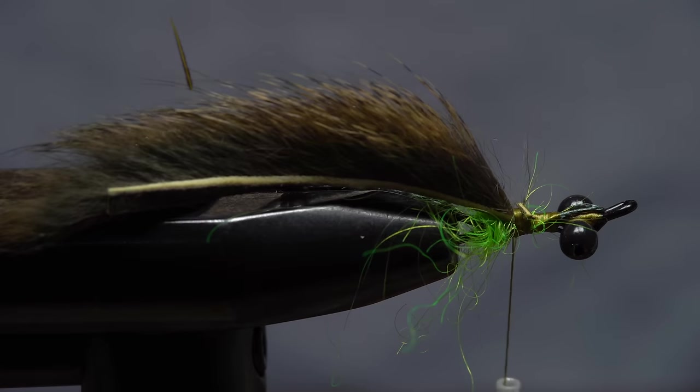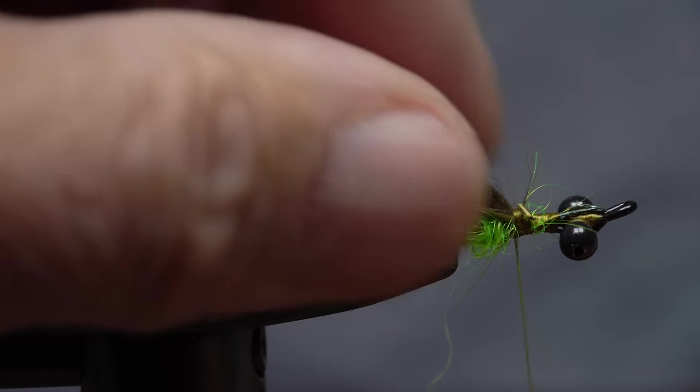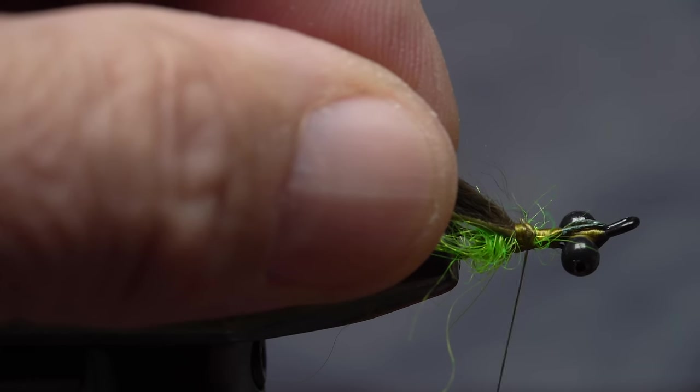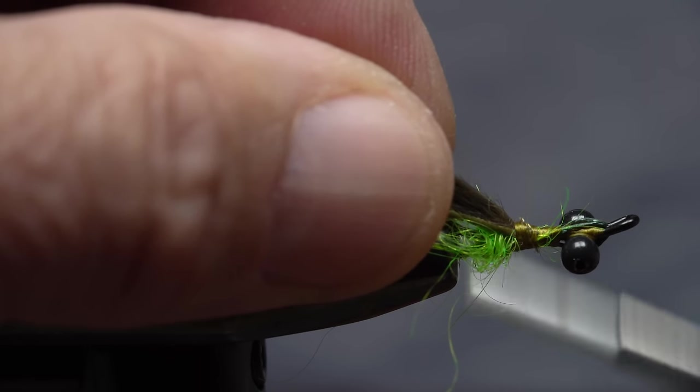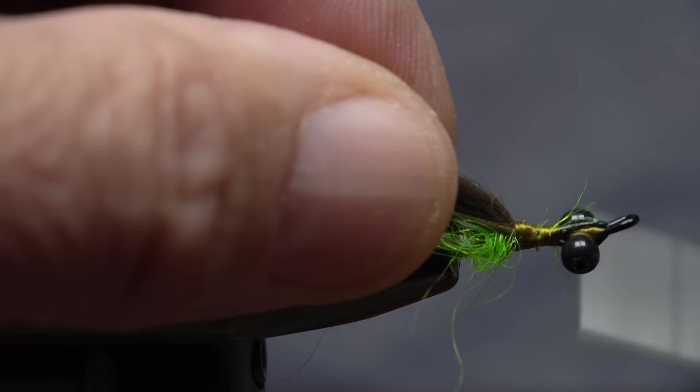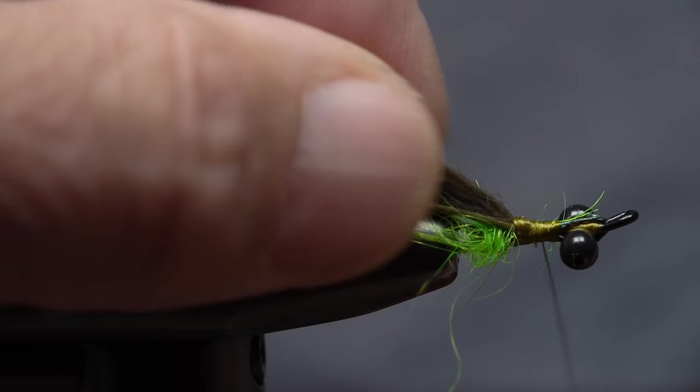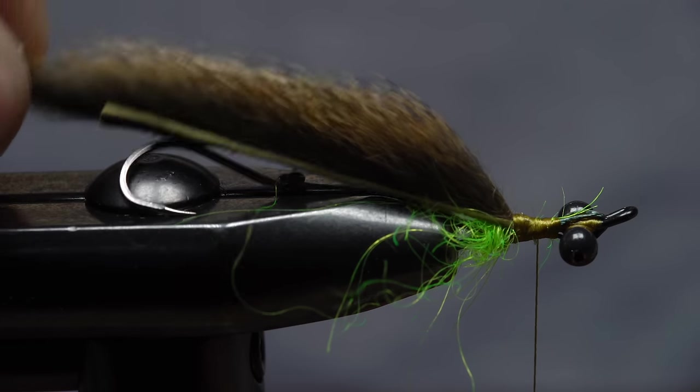You can then snip the excess off close, but save the segment for the next step in the tying process. Take thread wraps to cover the butt end of the leather and generally neaten up the area. End with your thread halfway between the eyes and the base of the tail.